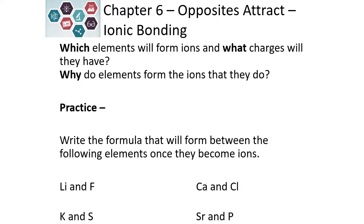Here's some practice. Write the formula that you would form between the following elements once they become ions. Based on its position on the periodic table, lithium would become a positive one charge. Fluoride would be a negative one charge — we would just need one of each to make lithium fluoride, LiF. Lithium has one valence electron, fluoride has seven, and so this extra electron will be transferred to the fluoride.